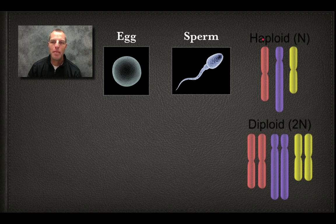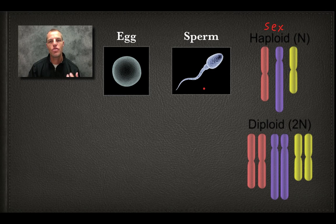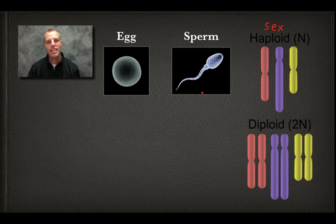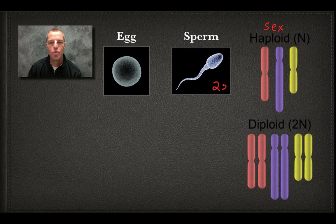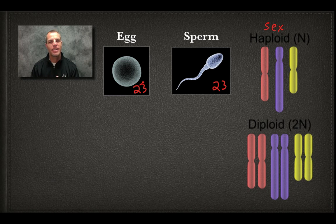The haploid cells we find in our body are our sex cells — that is our sperm and our egg. Humans' body cells, called somatic cells, have 46 chromosomes. Sex cells are haploid, so they only have half that number: a sperm has 23 chromosomes and an egg has 23 chromosomes. Sex cells are always haploid — and a helpful memory trick is that haploid starts with 'ha,' which kind of sounds like 'half,' so sex cells always have half the number of chromosomes that body cells have.